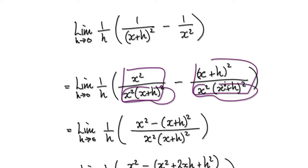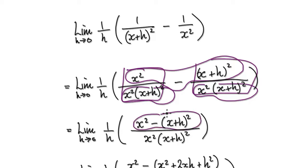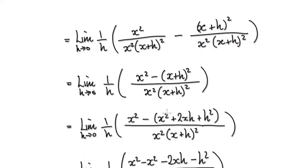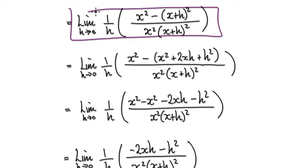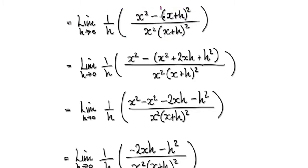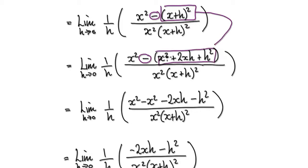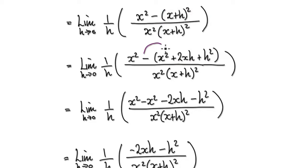Now you've got two fractions. Notice that the two denominators are now the same — so you can merge these two fractions together. That will then give you this expression here. Now multiply this out — notice that the minus sign is on the outside.